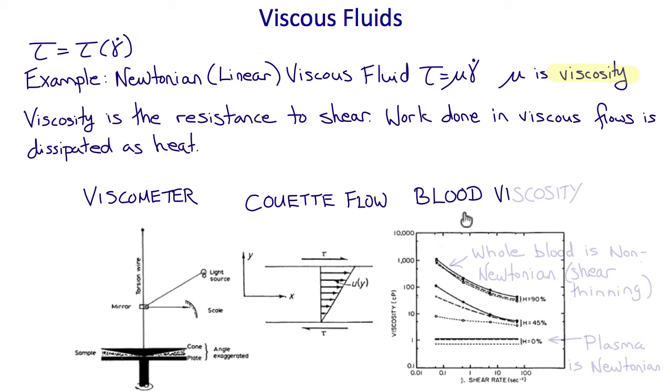This plot shows blood viscosity as a function of shear rate for different hematocrits, which is different amounts of red blood cells. You can see that plasma, where there's no red cells, is Newtonian. The viscosity doesn't change with the shear rate, it's constant. However, whole blood, which has about 45% red cells, has a non-constant viscosity which decreases with the shear stress. So whole blood is a non-Newtonian, shear thinning fluid.